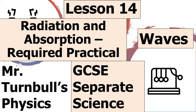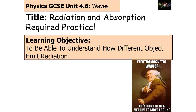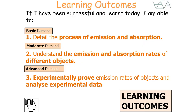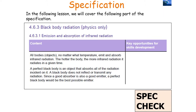In today's lesson we're going to try to understand how different objects emit radiation. If we're successful, we can detail the process of emission and absorption, understand the emission and absorption rates of different objects, and experimentally prove emission rates of objects and analyse experimental data. This forms part of the GCSE specification in the Waves topic in physics.